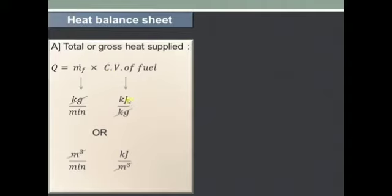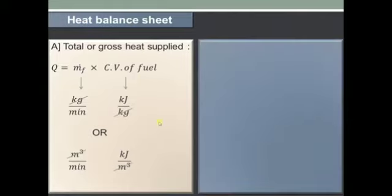The calorific value of fuel is normally taken as: for petrol it is 44,000 kJ per kg. The power developed by the engine also depends on the calorific value of the fuel, and the design of the engine depends mostly on the calorific value or type of fuel being used in it.